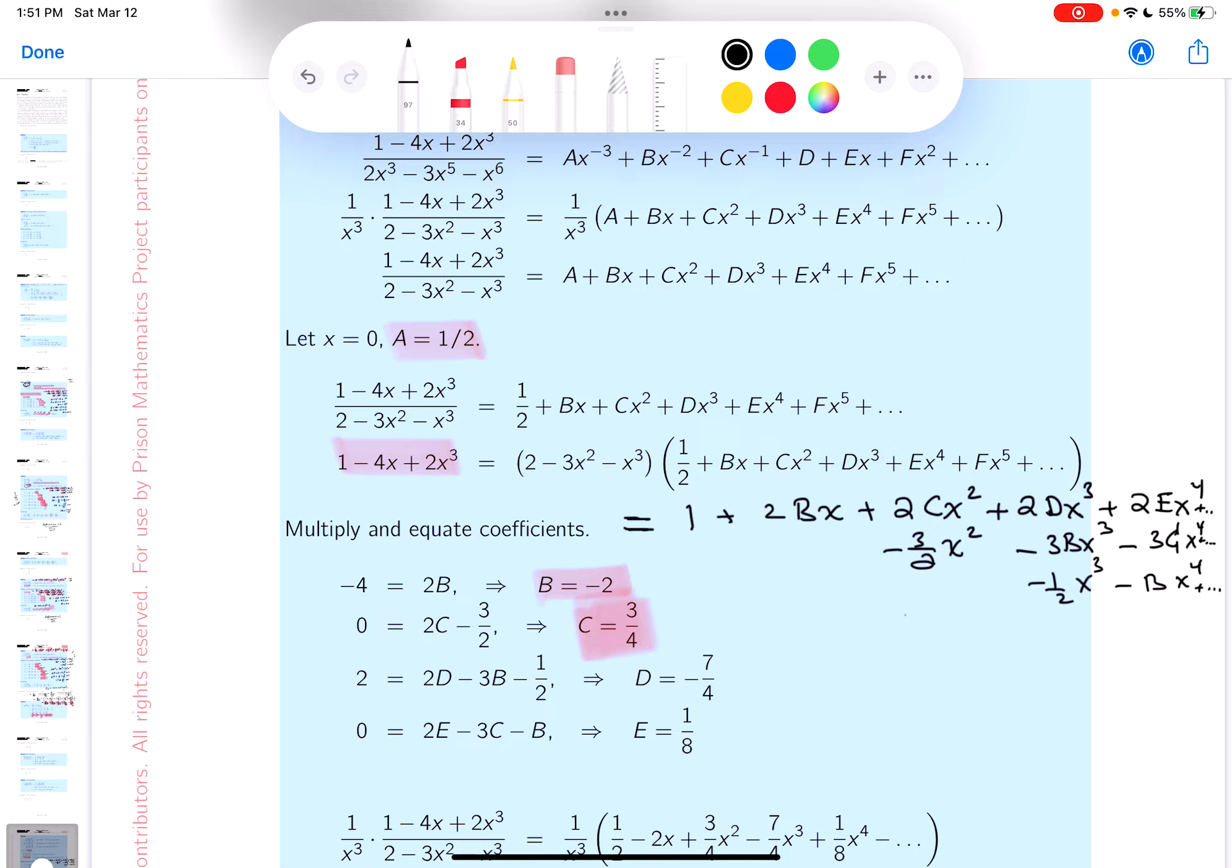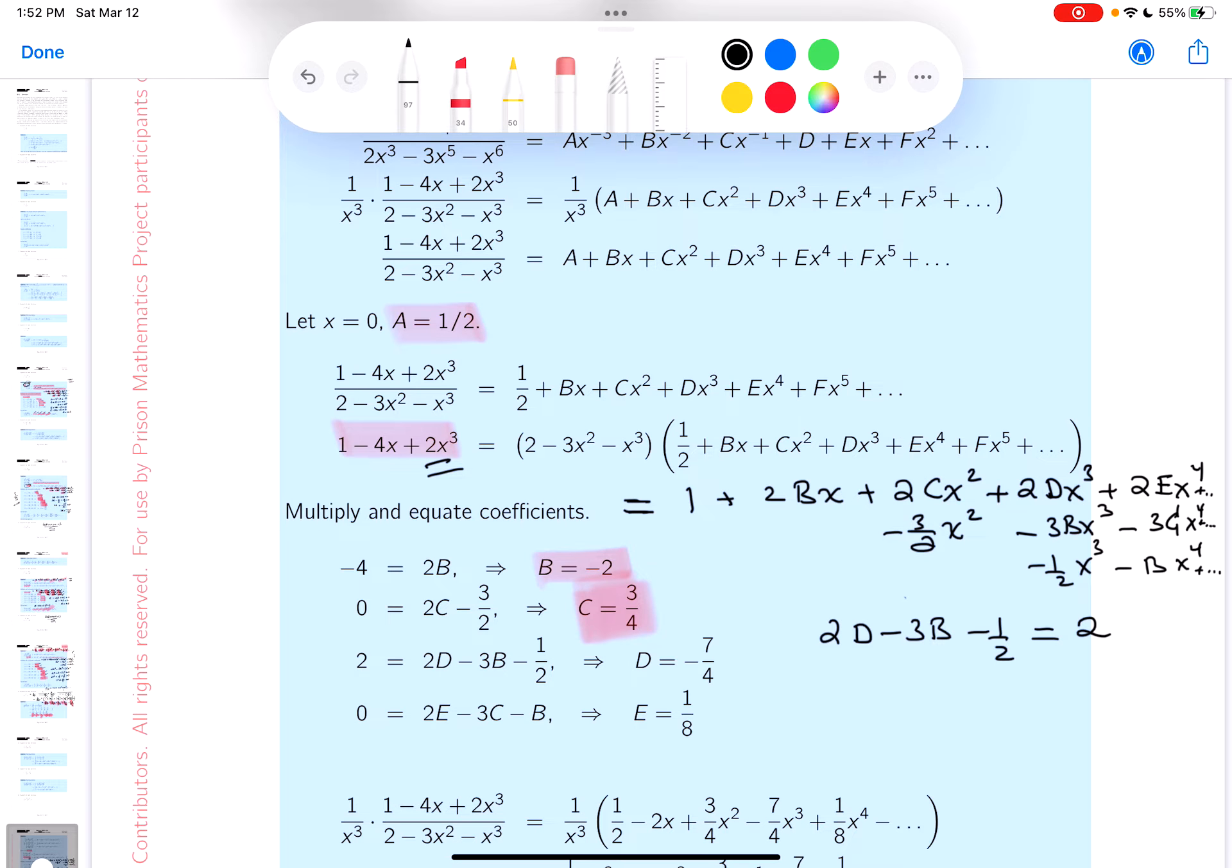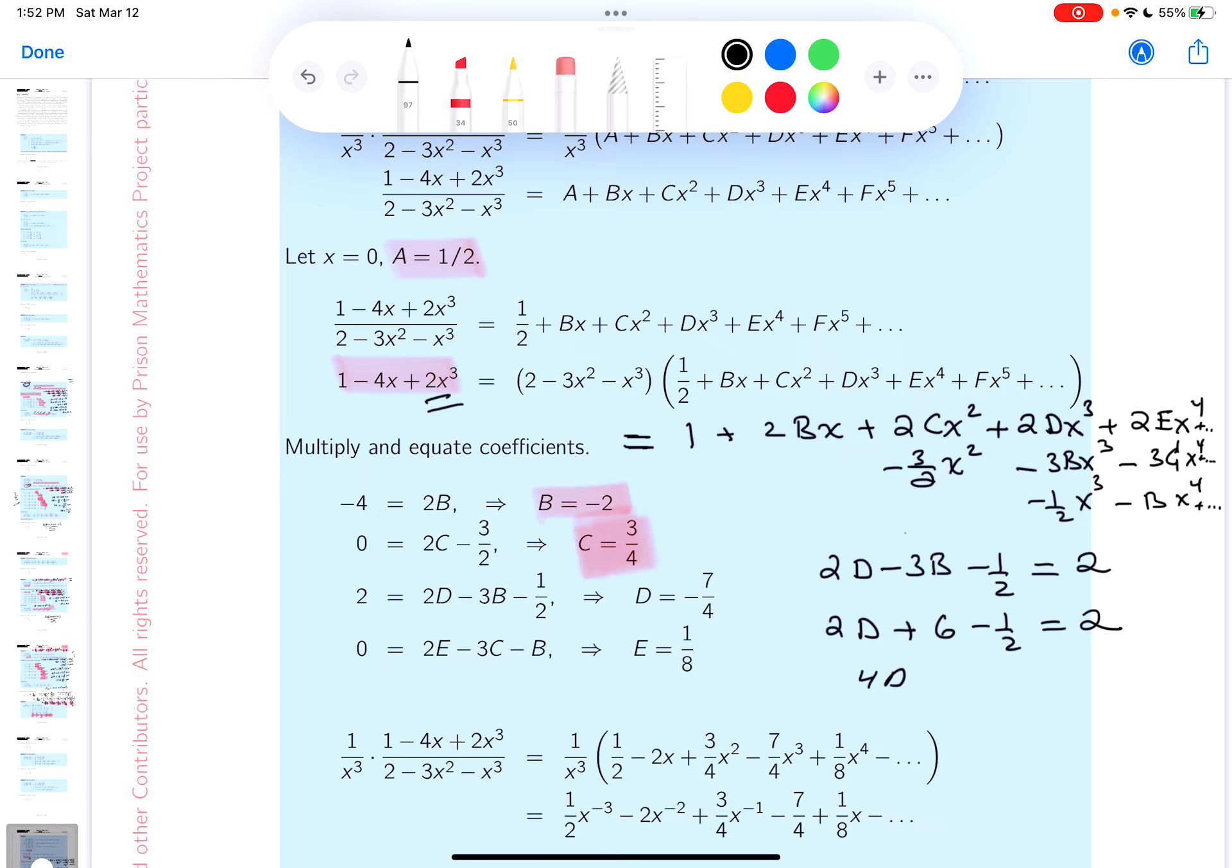All right. Let's go for the D now. So what do I know? It's a cube, right? So 2D minus 3B minus one half has got to be the two. We're equating coefficients. Do I know what B is? It's minus two. So you get 2D plus six minus one half is equal to two. I can multiply both sides by two. You get 4D plus 12 minus one equals four. 4D equals, let's see, 12 minus one is 11. To get 11 from four, you're going to get minus seven. So D equals minus seven quarters. Let's see if we got that.